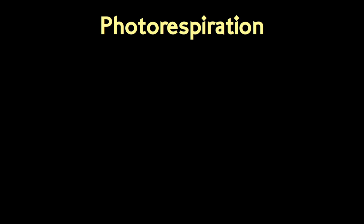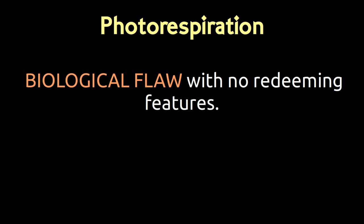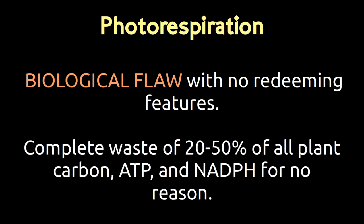In a nutshell, that is the Calvin cycle. But another thing also happens here which is known as photorespiration. Photorespiration happens all the time and is one of these big things plants just need to deal with. It does not help the plant at all — it is a big problem. It can waste 20 to 50 percent of all the carbon, ATP, and NADPH the plant gains, and gives nothing back. Photorespiration is a big problem.